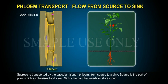Phloem transport: flow from source to sink. Sucrose is transported by the vascular tissue, phloem, from source to a sink. Source is a part of plant which synthesizes food, like the leaf.